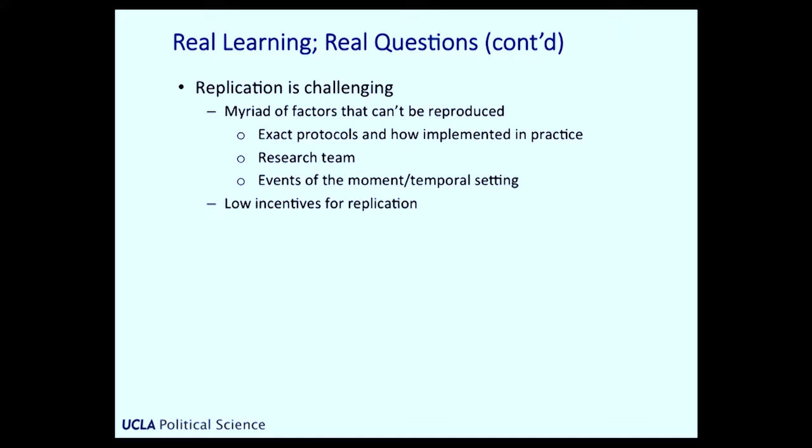Replication is challenging, and the challenge is compounded by the fact that there are very low incentives for replication. If you are the first person to have thought up some intervention and rolled it out and reported the results, you may get your paper published in a really good journal, and it might even get you a promotion. But if you replicate somebody else's study, that is scientifically an extraordinarily important thing to do — the professional rewards for replicating somebody else's study, even your own study, are much less than doing the first. As a consequence, you've got all these people doing one-off studies in virgin territory, and far fewer people replicating studies that inform our sense of what works and what doesn't.